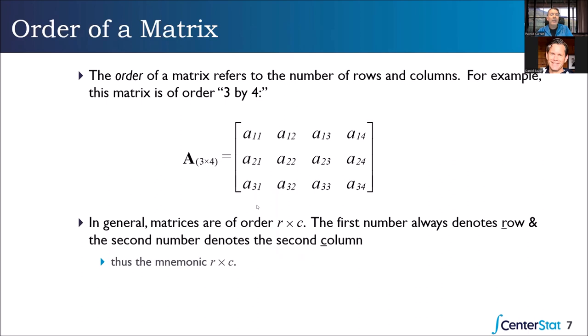You'll often hear about the 'order' of a matrix. If you're at a cocktail party with fellow grad students and someone says 'what is the order of your data matrix?' — all that is, is how many rows by how many columns. What are the dimensions? By convention, the first number is always the number of rows and the second number is always the number of columns.